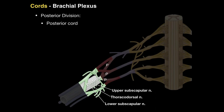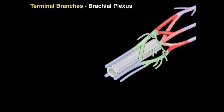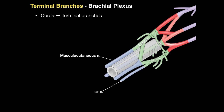Now for the terminal branches: the cords give rise to these terminal branches. The lateral cord continues to become the musculocutaneous nerve, which innervates the biceps, brachialis, and coracobrachialis, and provides sensation to the lateral part of the forearm. The medial cord continues as the ulnar nerve, innervating a couple of flexors in the forearm and many hand muscles.